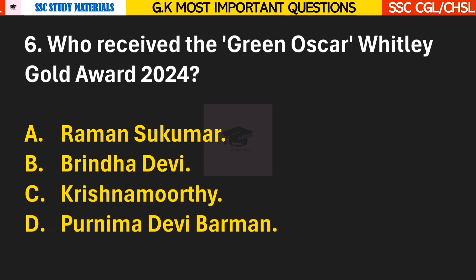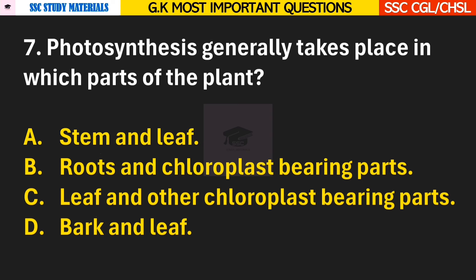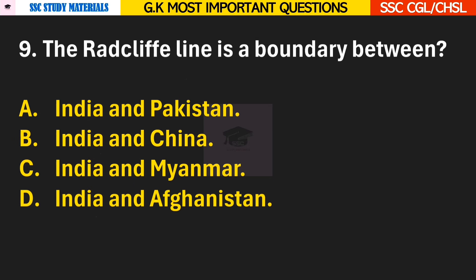Question 6: Who received the Green Oscar White Lake Gold Award 2024? Answer D — Purnima Devi Barman. Question 7: Photosynthesis generally takes place in which part of the plant? Answer C — Leaf and other chloroplast-bearing parts. Question 9: The Radcliffe line is a boundary between? Answer A — it is a boundary between India and Pakistan.